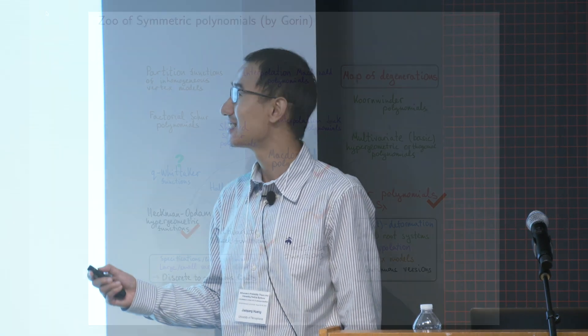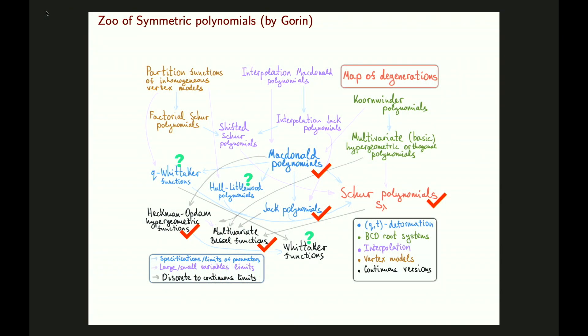What we can prove is slightly more general. Here is the zoo of symmetric polynomials. There are many different polynomials, and what we can do is study the asymptotics of some specialization of the Macdonald polynomials. As degenerate cases we have Jack polynomials, Schur polynomials, or multivariate Bessel functions, which correspond to spherical integrals. However, we cannot yet handle the Whittaker functions or Hall-Littlewood polynomials, which come from polymer models or vertex spin models.